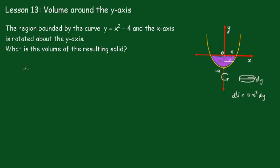So the volume then is equal to pi times the integral from minus 4 to 0 of x squared dy.